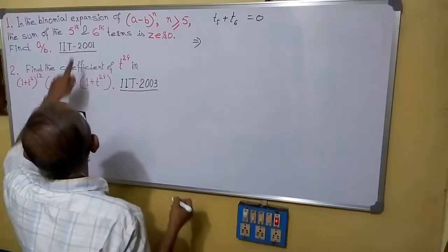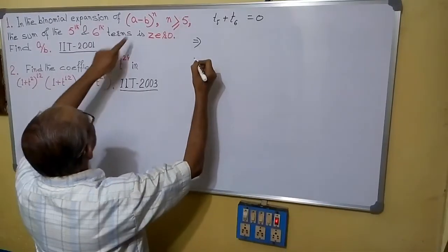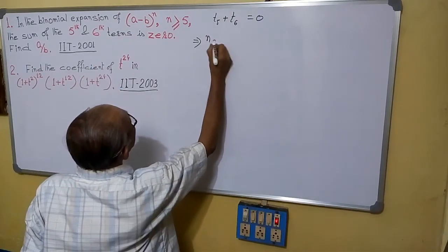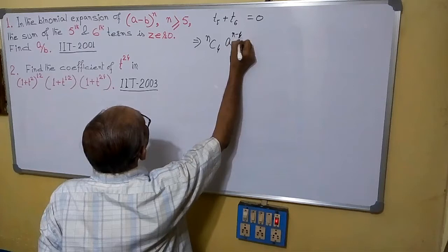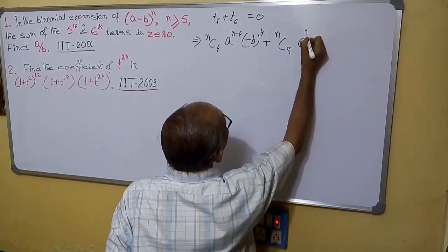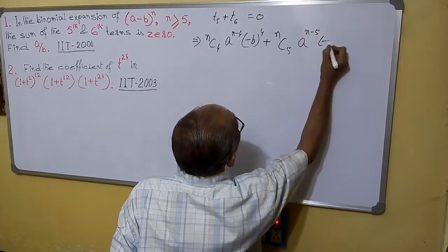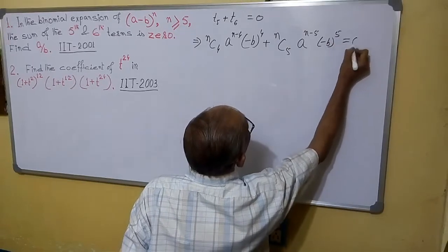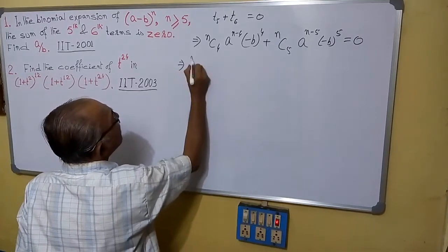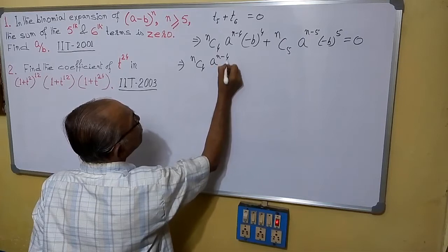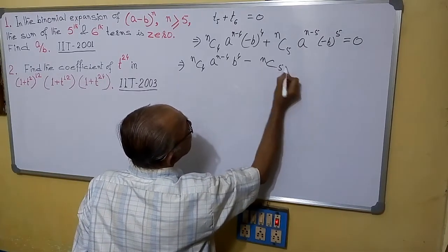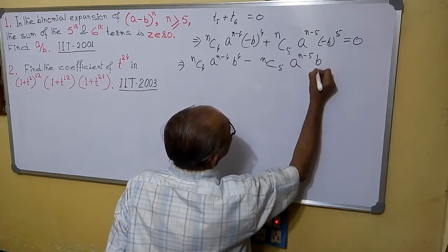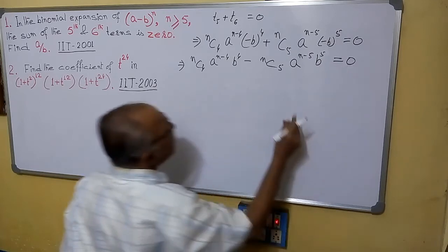What it means? T5 means T(4+1). So it is nC4 · a^(n−4) · (−b)^4. This is T5, plus T6 which is nC5 · a^(n−5) · (−b)^5. This whole expression equals to zero. Or we can say nC4 · a^(n−4) · b^4 equals nC5 · a^(n−5) · b^5.